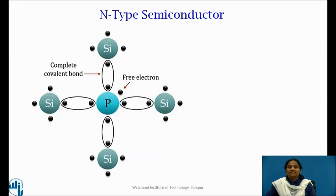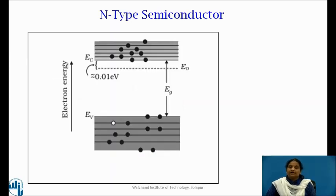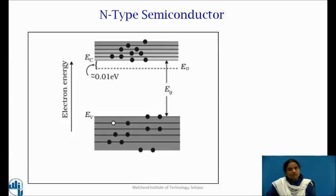Therefore, the ionization energy of the 5th electron is very small. Hence, the thermal energy can easily liberate the 5th electron from the nucleus. It means that the energy levels corresponding to phosphorus atoms are nearer to the bottom edge of the conduction band. The energy band diagram of n-type semiconductor is shown in the figure. The energy level due to phosphorus is known as the donor level and it represents the ground state of the 5th electron of the phosphorus atom. The donor levels are expected to be located very near to the bottom edge of the conduction band.